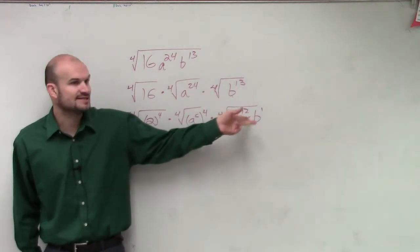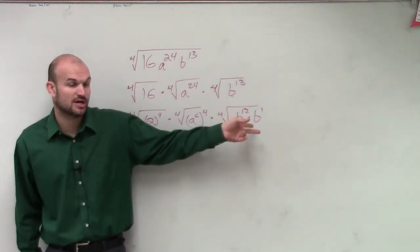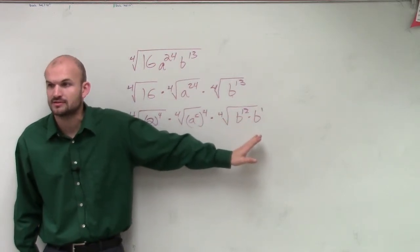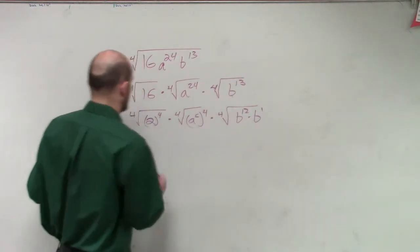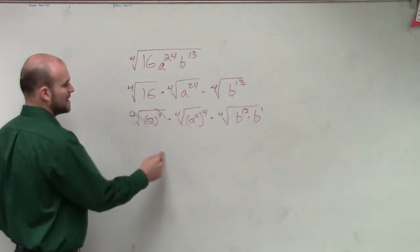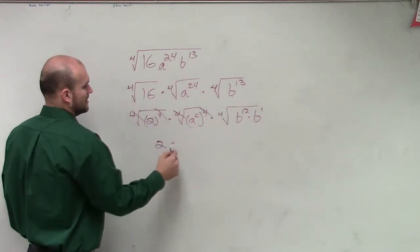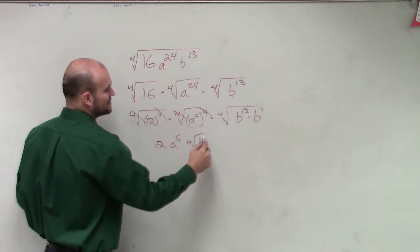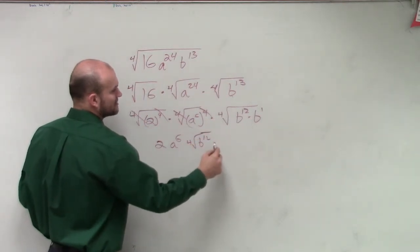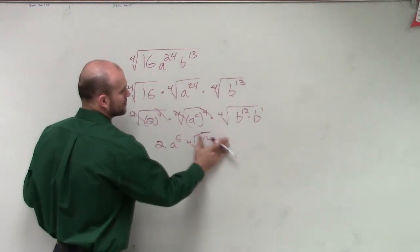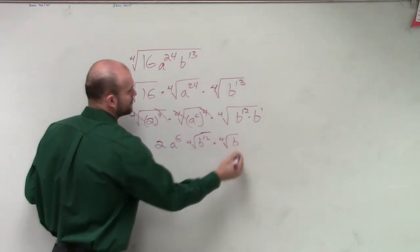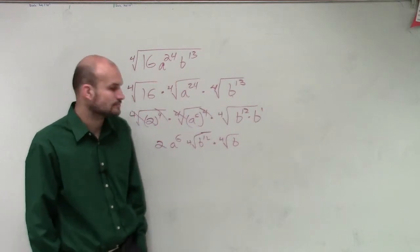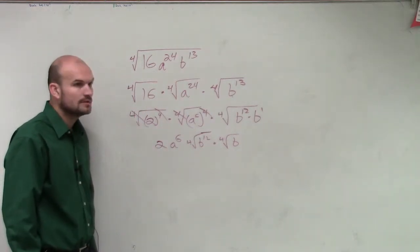Now, since I have a multiplication, I'm sorry, since I have a product, can I break that up by using the product rule of exponents again? Or product rule of radicals? Yeah. So here inverse operations leaves it with a 2, a to the sixth, and now we can just rewrite this as 4th root of b to the 12th times the 4th root of b.